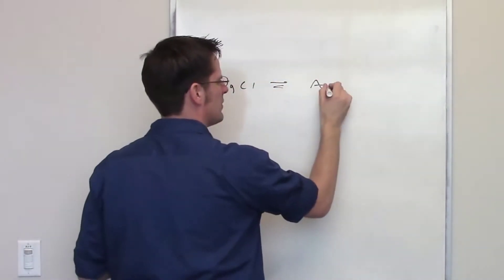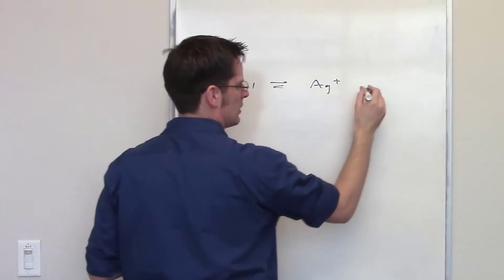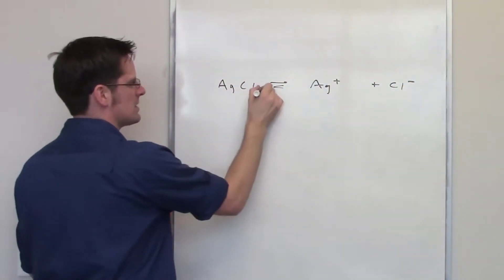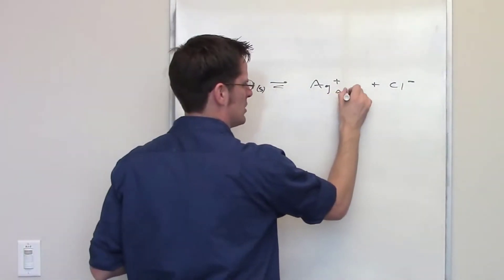So I've got silver chloride thrown into a bucket of water. It's going to dissociate to give off one molar equivalent of silver cation, one molar equivalent of chloride anion. This is a solid, of course, and these guys are aqueous species.